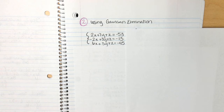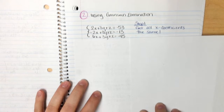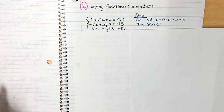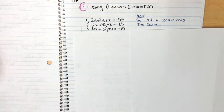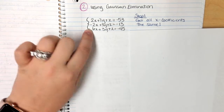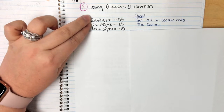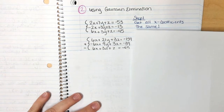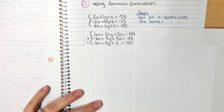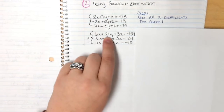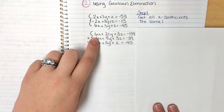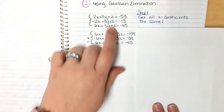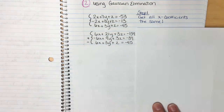I write the system in the exact same way. The very first step of Gaussian elimination is that you need all of your x coefficients to be the same — I always choose x out of habit, though you could eliminate z first. To get all x coefficients equal, I multiply the first and second equations both by 3 to get 6 for each. So 2 times 3 gives 6, 7 times 3 gives 21, 1 times 3 gives 3, and negative 53 times 3 gives negative 159. For the second equation: negative 2 times 3 gives negative 6, 3 times 3 gives 9, 1 times 3 gives 3, and negative 13 times 3 gives negative 39.